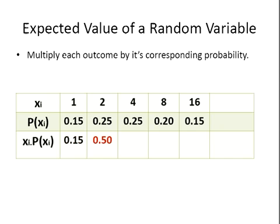The next case we multiply 2 by 0.25, so 2 by 0.25, and we get 0.50. Likewise, 4 times 0.25, we get 1.00, 8 by 0.2, we get 1.6, and finally 16 by 0.15, we get 2.40.